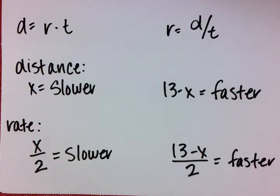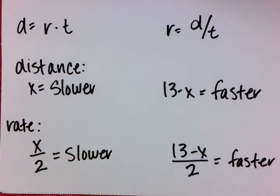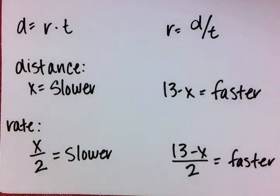Let's set up some facts here that will help us solve this problem. The first thing we know is that we're going to use the distance formula, which is distance equals rate times time. Because it's asking us for rate, we're going to solve for rate, which means rate equals distance over time.